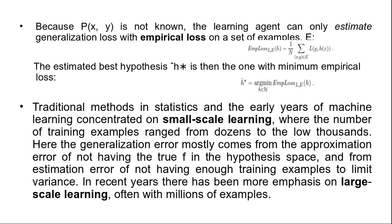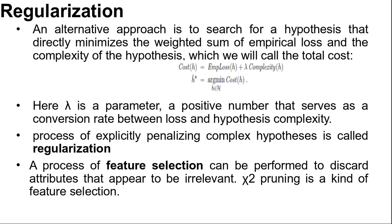In recent years there has been more emphasis on large-scale learning, often with millions of examples. Here the generalization error is dominated by limits of computations. There is enough data and a rich enough model that we could find an h that is very close to the true f, but the computation to find it is too complex, so we settle for a sub-optimal approximation. That's all about error rate to loss.